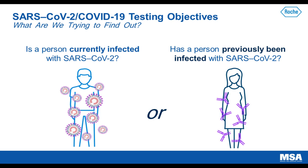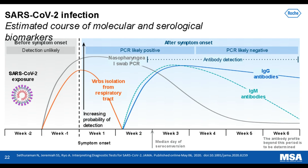When looking at these tests, we need to understand what we are trying to find out. If a person is currently infected with SARS-CoV-2 and we want to know if they are or are not, we would want to use a nucleic acid amplification test — a NAT test — identifying the genetic material of the pathogen, or an antigen test identifying an antigen of the pathogen. If the question is whether a person has previously been infected with SARS-CoV-2, we really want to use a serology test to identify antibodies present due to the infection.